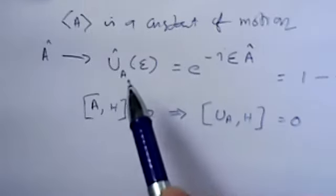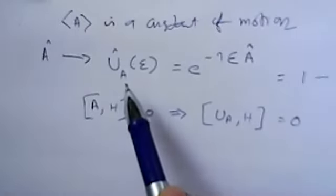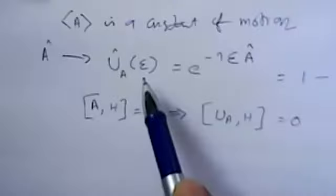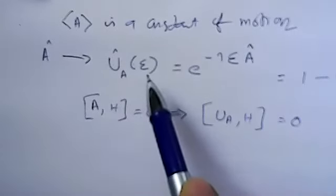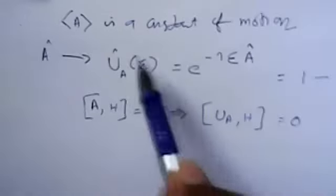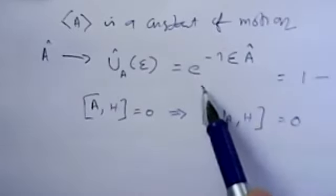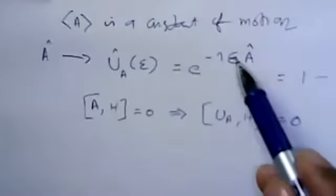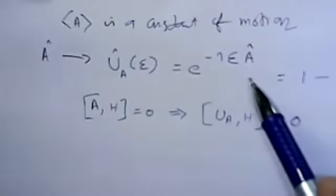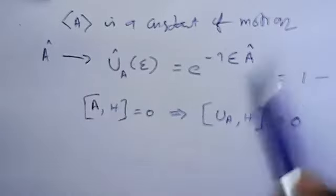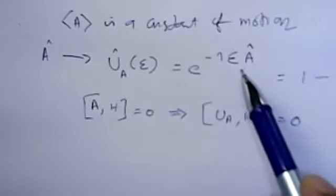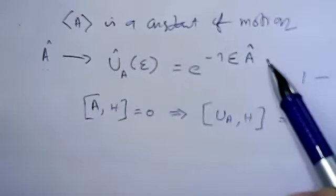That U can be written as U_A, because A generates U. Then U is a function of epsilon, where epsilon is a very small factor. That unitary operator can be written as e to the power of minus i epsilon A. Epsilon can be a vector or scalar, depending upon whether A is a vector or scalar.